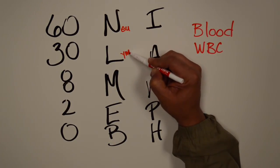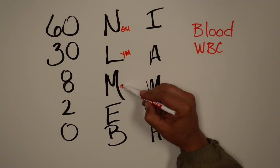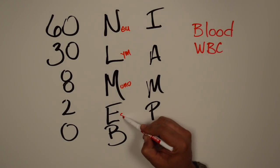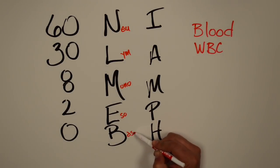Neutrophils, we got our lymphocytes, we got our monocytes, we got our eosinophils, and we got our basophils.